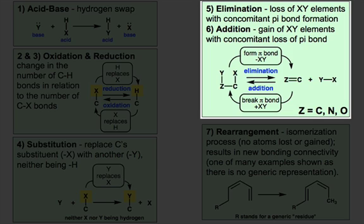The reverse process is the addition of the elements XY across the C-Z bond. This may involve either nucleophilic or electrophilic addition. In other words, the incoming reagent XY may either be a nucleophile, we call that nucleophilic addition, or an electrophile.